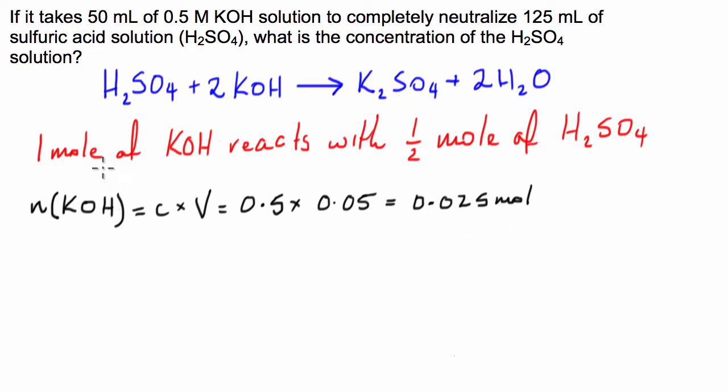Now, we can see here that one mole of potassium hydroxide reacts with half a mole of sulphuric acid. So what that means is if we've got this many moles of potassium hydroxide that is required, it is going to react with half that amount of H2SO4. So the number of moles of H2SO4 is equal to half the number of moles of KOH, which is equal to 0.0125 mole.